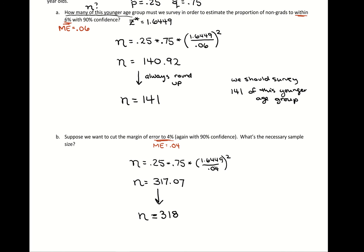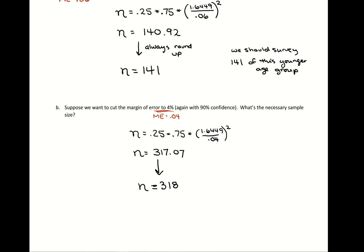and you said here's the data but by the way there's 3% error, they'd probably be happy about that because now there's more accuracy. So for this, we should survey 318 of this younger age group.